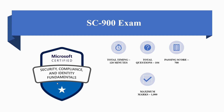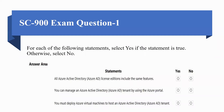Moving towards questions, this is the first question of the SC900 exam. For each of the following statements, select yes if the statement is true, otherwise select no. The statements are: first, all Azure Active Directory (Azure AD) license editions include the same features. Second, you can manage Azure Active Directory tenant by using the Azure portal. Third, you must deploy an Azure virtual machine to host an Azure AD tenant.